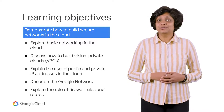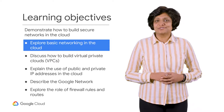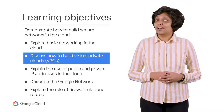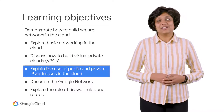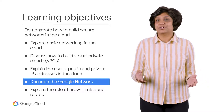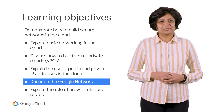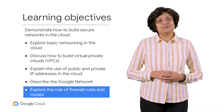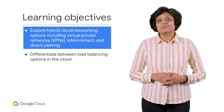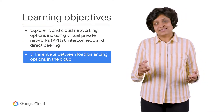To achieve this goal, you will need to meet the following learning objectives: provide an overview of networking in the cloud; discuss how to build virtual private clouds; explain the use of public and private IP addresses; describe the Google network, including regions, zones, cache nodes, point of presence, and fiber architecture; and explore the role of firewall rules and routes. You will also explore various hybrid cloud networking options and differentiate between load balancing options.